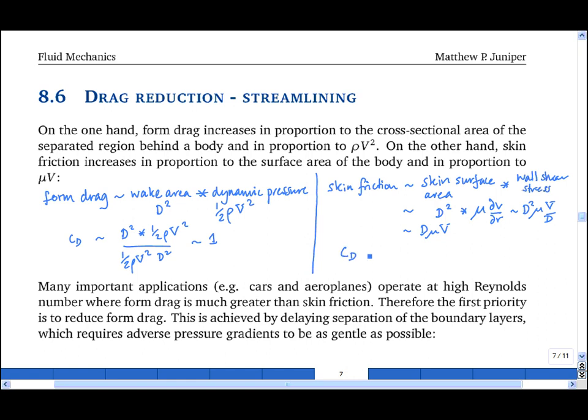And so for skin friction, the drag coefficient CD scales with d mu v divided by a half rho v squared times d squared, which is the same denominator as before. So if we drop the half, we see that this cancels down to mu upon rho v d, i.e. 1 upon the Reynolds number.